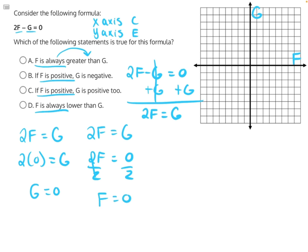So that means our only intercept is in the origin, zero comma zero. So that makes it tricky to graph. However, it does eliminate two answer choices.